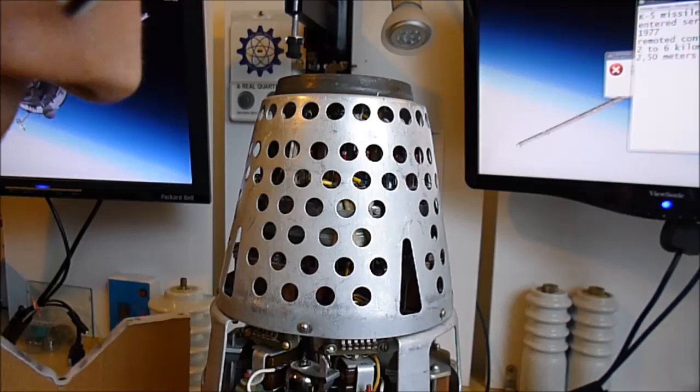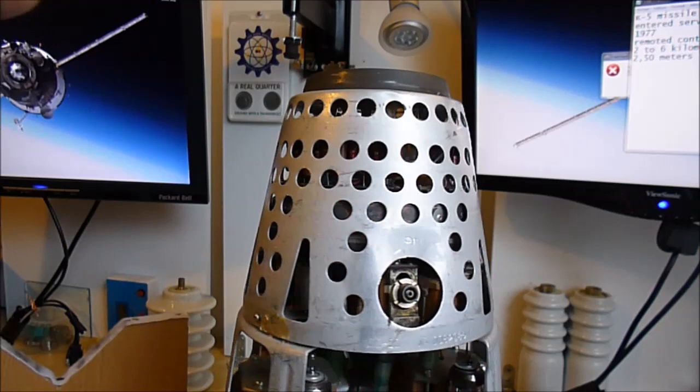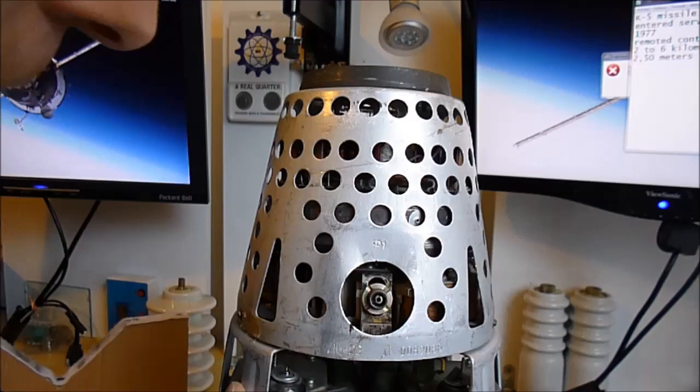These triangular holes here are for accessing screws holding the two parts together. Here we have a coax connector. So let me undo the cover.